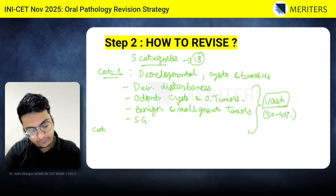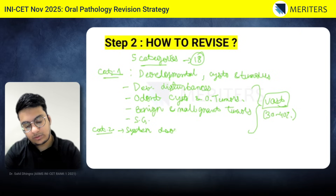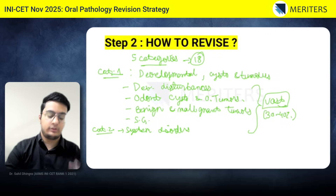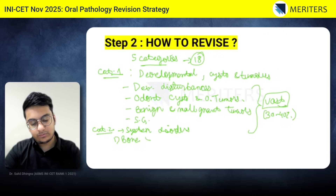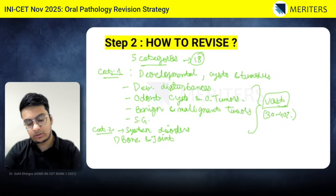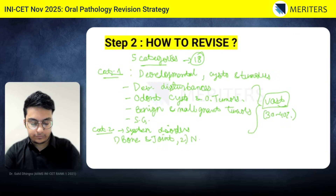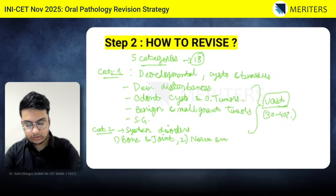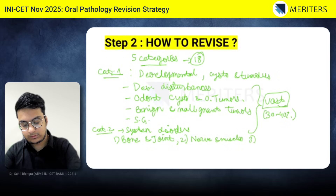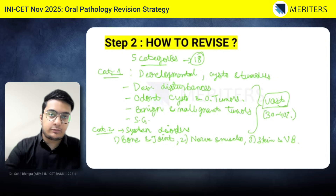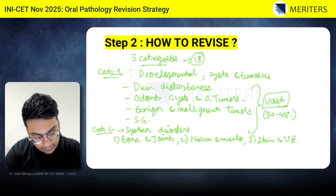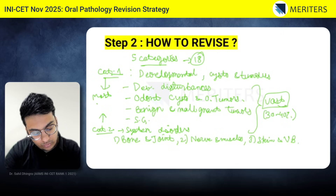Category two is your systemic disorders, which includes three chapters. First is bone and joint diseases, which covers fibrous dysplasia, Paget's disease, and similar conditions. Second is nerves and muscles. The last is skin and vesiculobullous lesions — lichen planus, pemphigus, etc. Categories one and two together are the most important parts of your oral pathology syllabus.